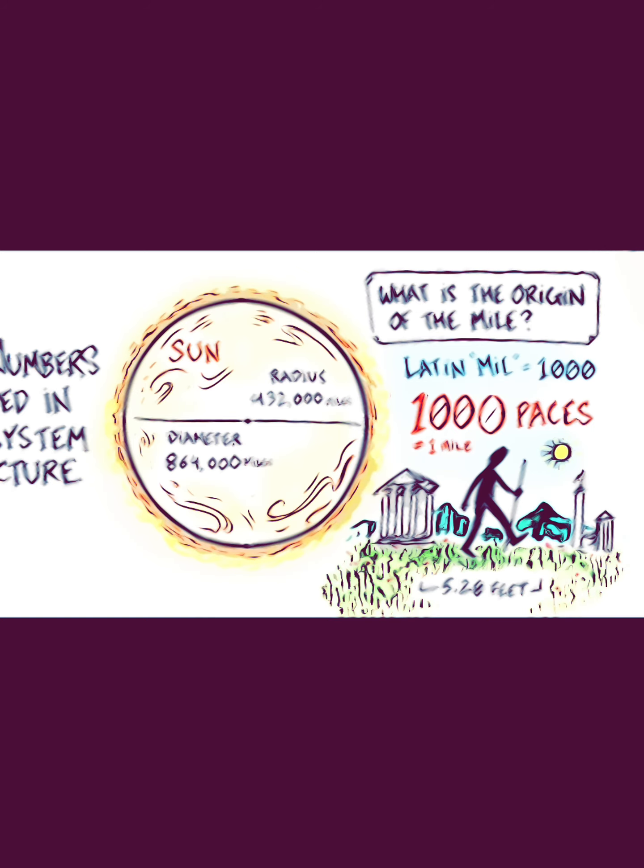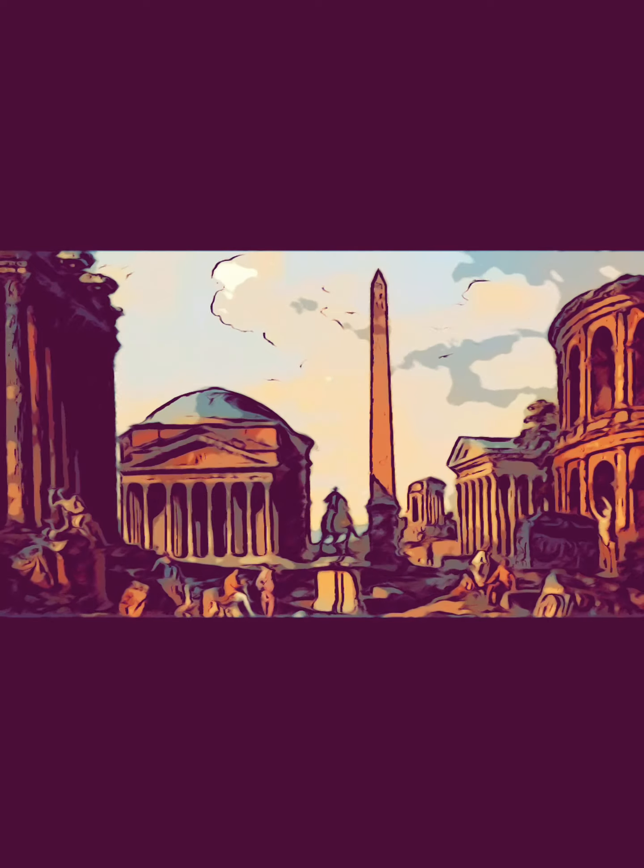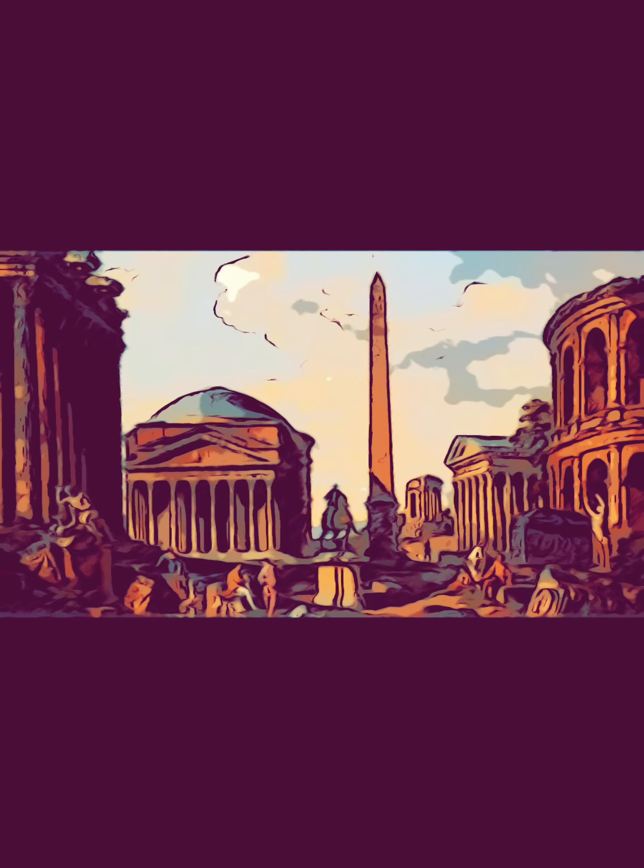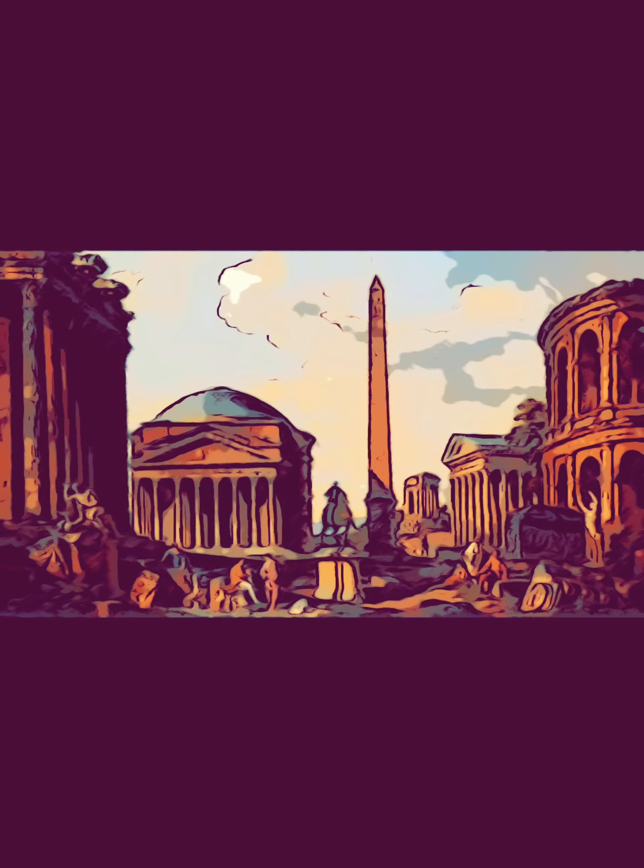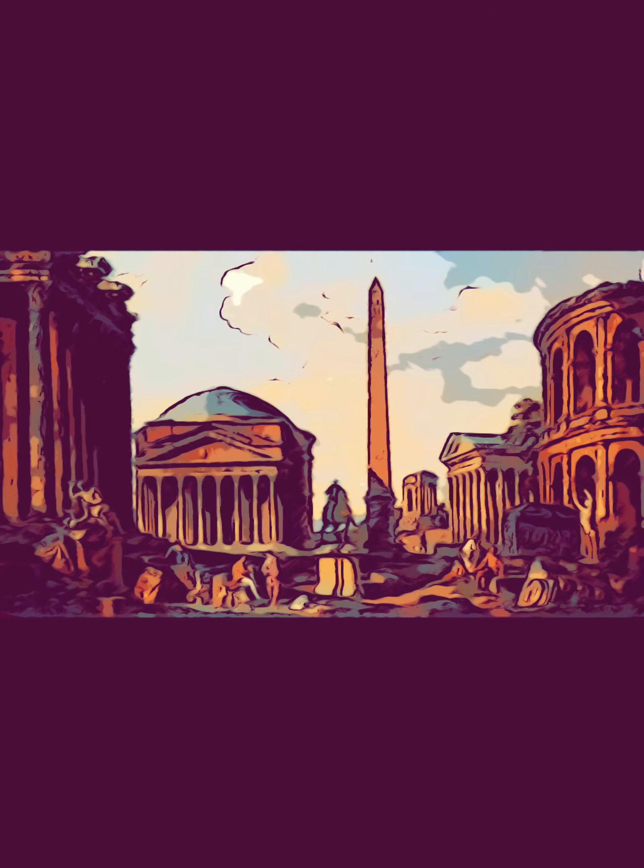Romans used a mile of a thousand paces. Rome had a city center, and everything was measured outwards from that center according to paces. A thousand paces gave the Roman mile, though the Roman pace was a little bit shorter.